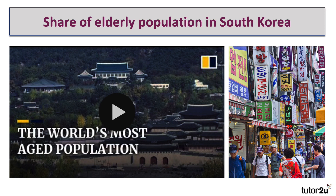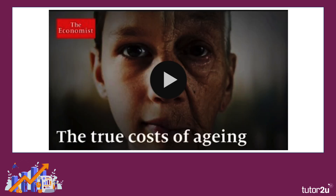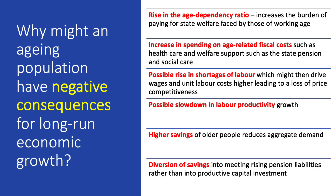I'll post links to these videos — there was an excellent short video on South Korea on the Geographic channel, which I'll post a link to in the comments section. So, why might an ageing population have consequences for economic growth? I'll also post a 12-minute discussion about the true cost of ageing published by The Economist in 2021. Why might an ageing population have negative downside consequences for long-run growth? Crucially, the key point is that an ageing population can put huge and growing pressure on pensions, health care, and social services.